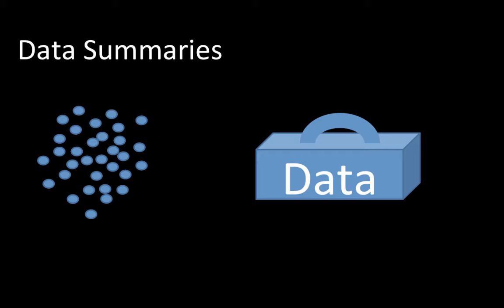One of the most commonly used summaries of data are measures of central tendency. Suppose we have the sales of 100 companies. It is just 100 numbers, each representing the sales of a particular company during a particular year. Suppose somebody comes along and says: can you describe these 100 numbers using just one single number, so I have a good handle on this? That is what we call a measure of central tendency.